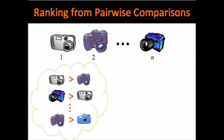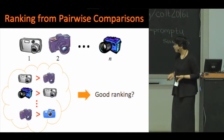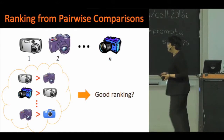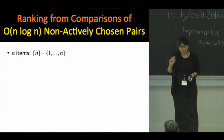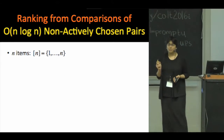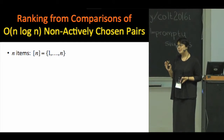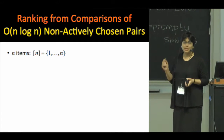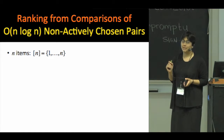This question is so ubiquitous that it's been studied in disciplines ranging from statistics to operations research, from theoretical computer science to machine learning and so on. The question we're interested in here is: when can we learn a good ranking or permutation of N items from comparisons of just N log N pairs that are chosen in a non-active or non-adaptive manner?